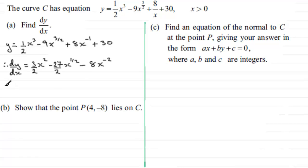Tidying this up, we have dy/dx = (3/2)x² - (27/2)x^(1/2). For the last term, x^(-2) is the same as 1/x², so -8 times 1/x² gives us -8/x². There's our answer for dy/dx.